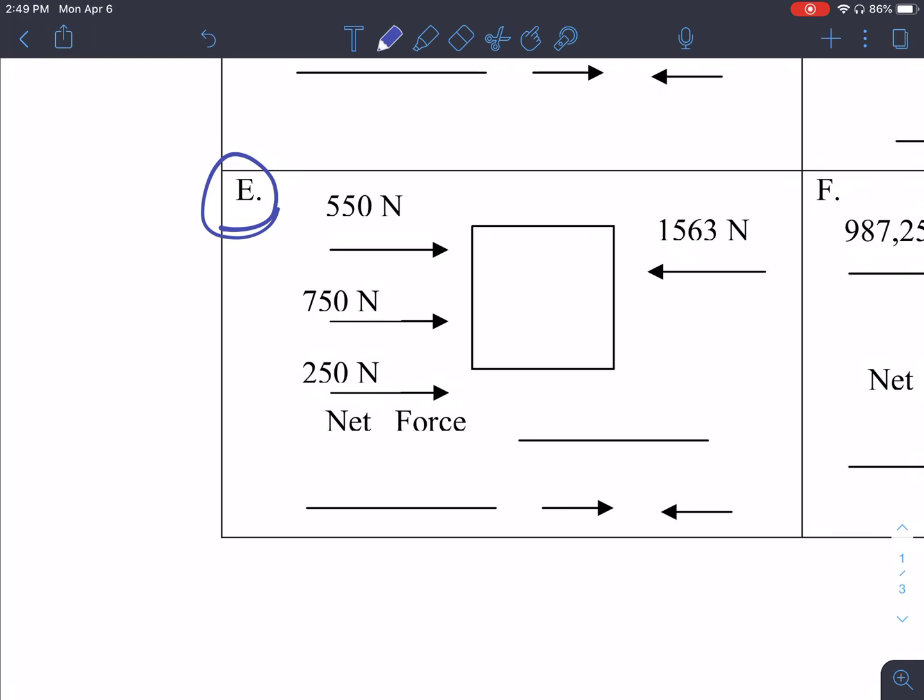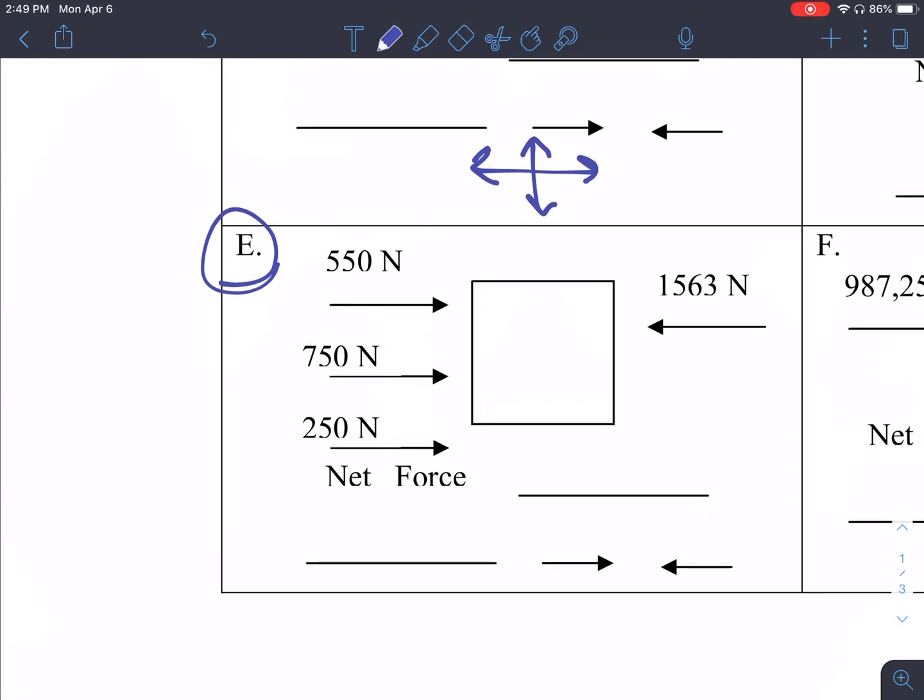So the first thing that we need to think about is what direction each of these forces are pushing. So from our lecture, we know that north and east are both positive directions, and west and south are both negative directions. So any forces pointing in the north or east direction, positive, west-south, negative.